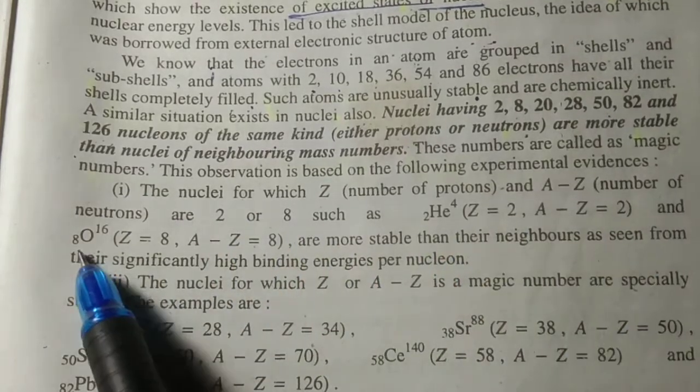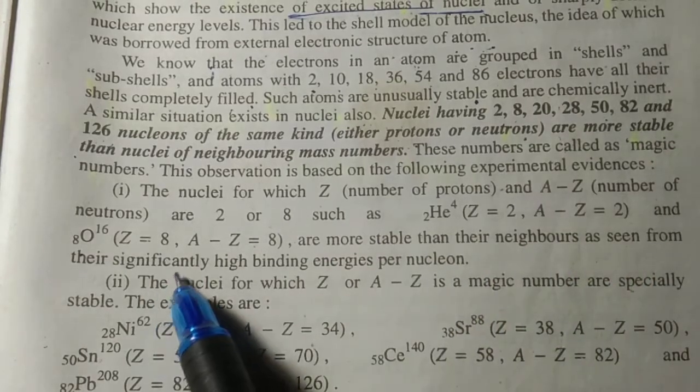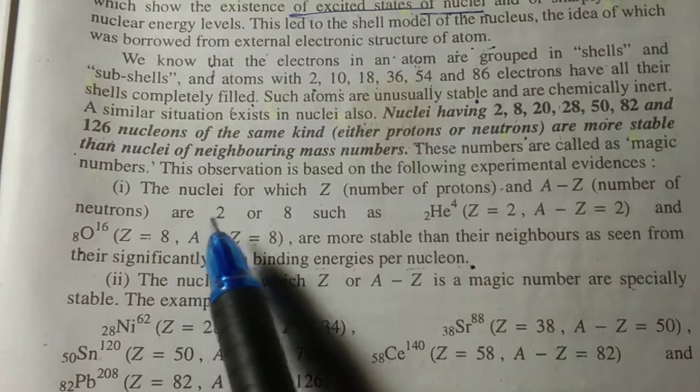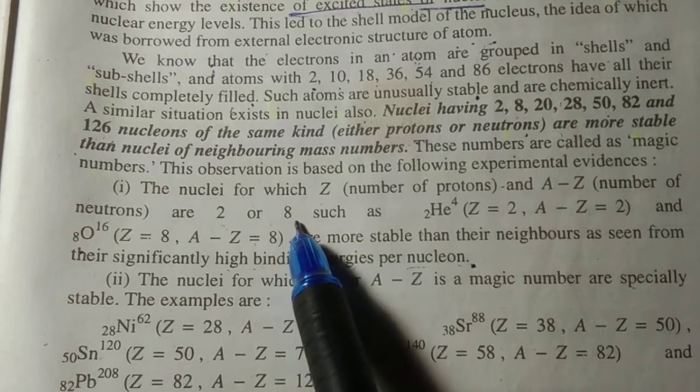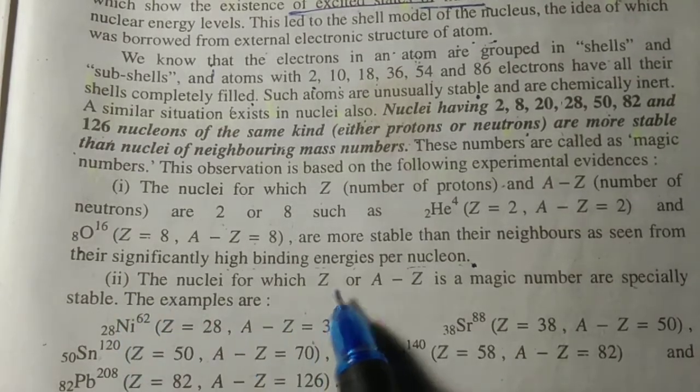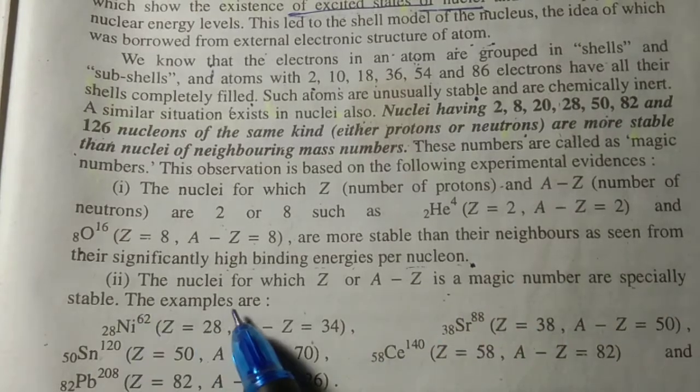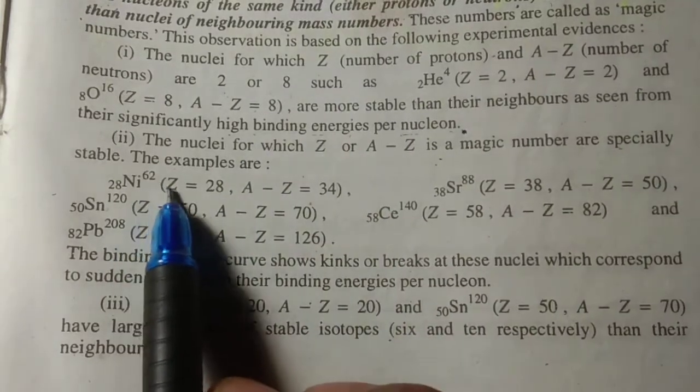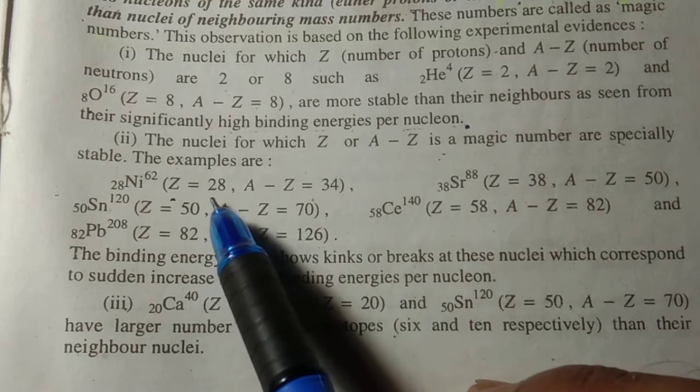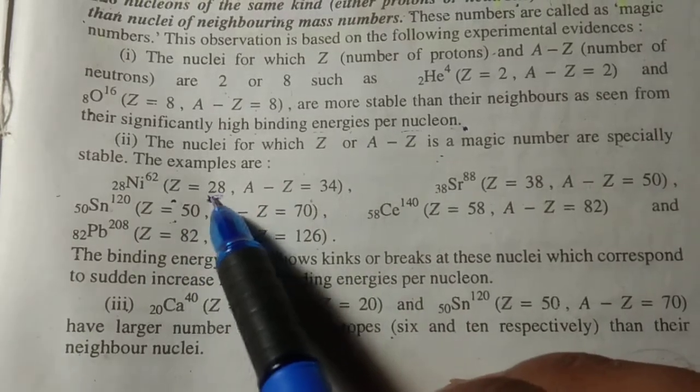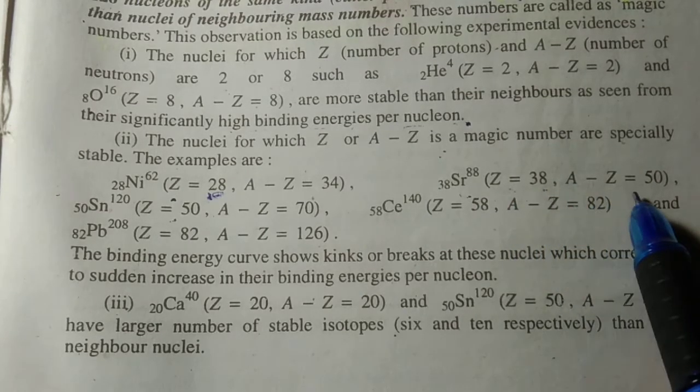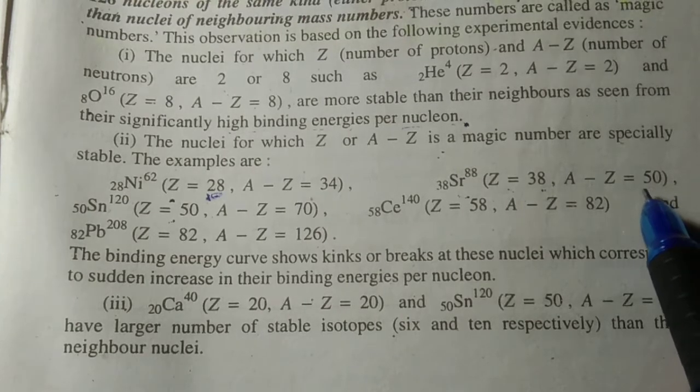This observation is based on the following experimental evidence. The nuclei for which Z (number of protons) or A minus Z (number of neutrons) is a magic number are more stable than their neighbors, as seen from significantly high binding energy per nucleon. From the binding energy curve, we can see that mass numbers 2 and 8 correspond to higher binding energies compared to neighboring nuclei.